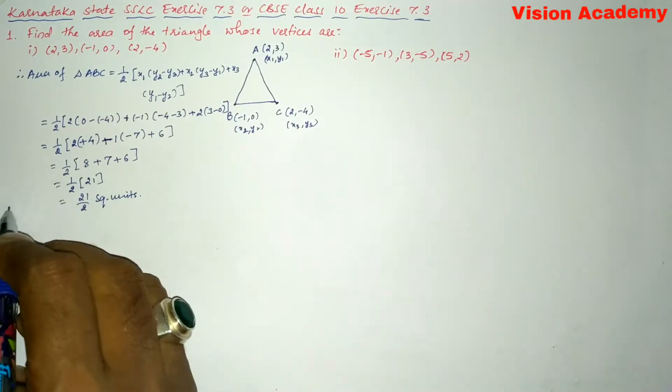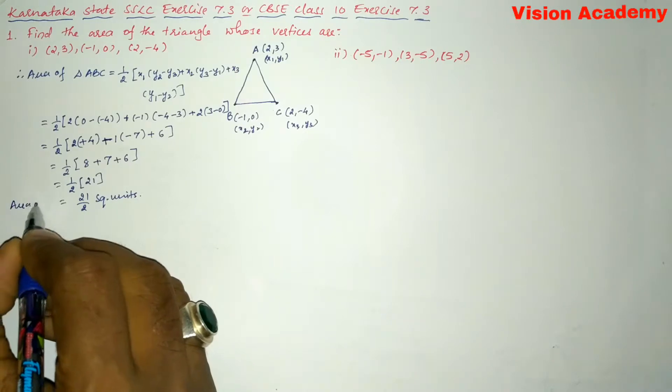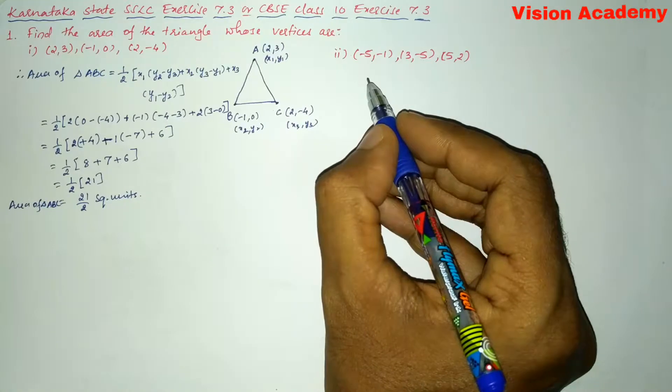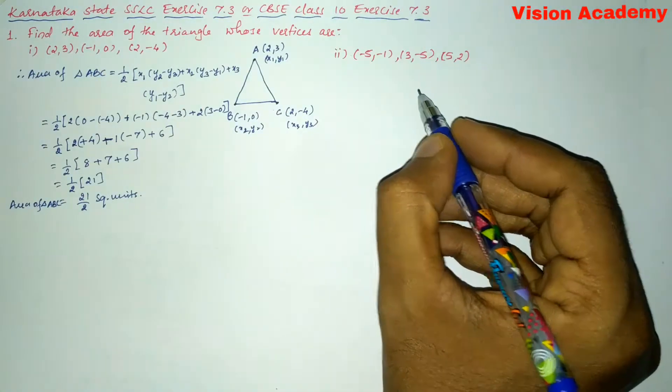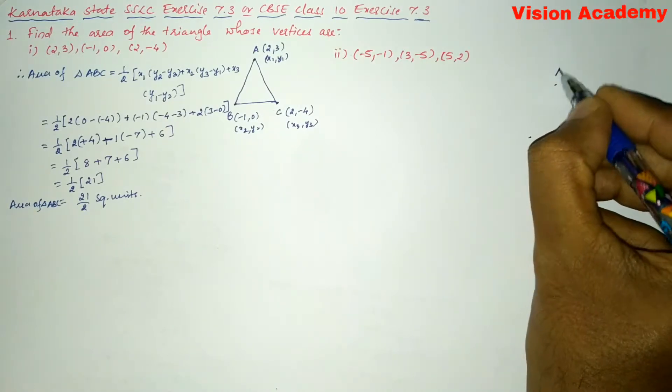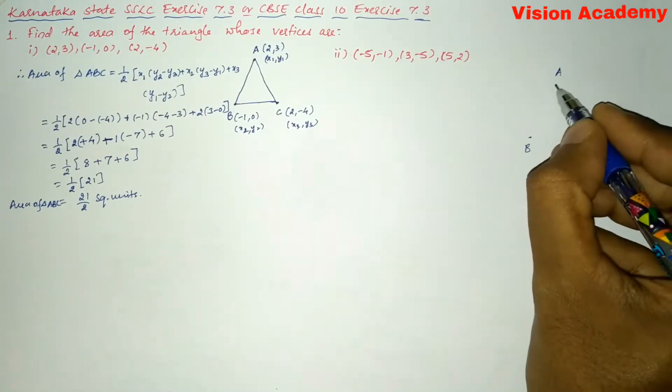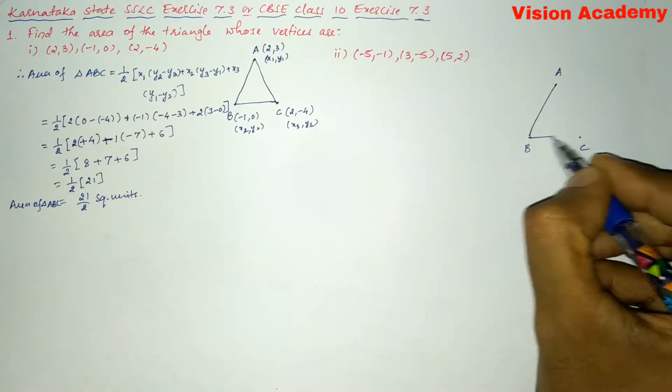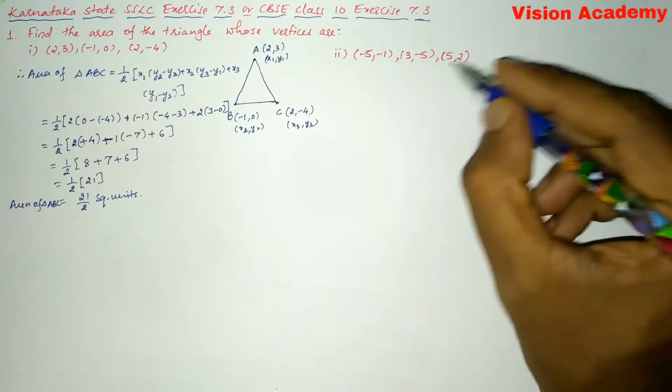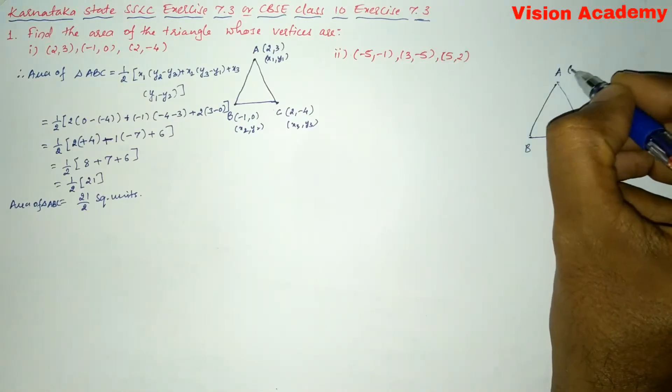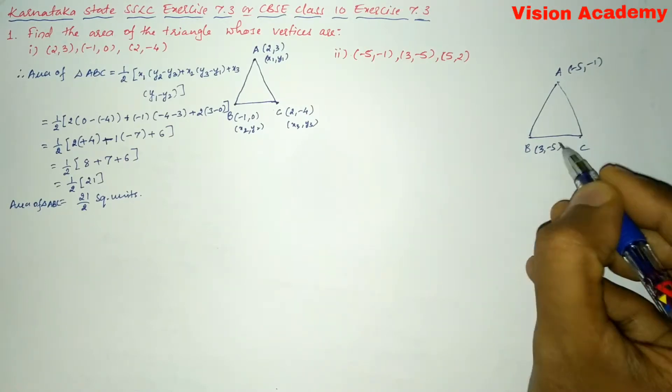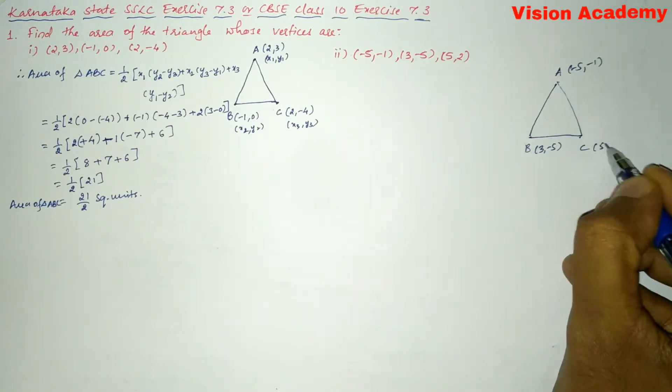Now let us move on to roman number 2. Here also we will take 3 points that forms the triangle. Let us name it as ABC and join AB, BC and AC. So let us write the coordinates of point A as (-5,-1) and B as (3,-5) and C as (5,2).